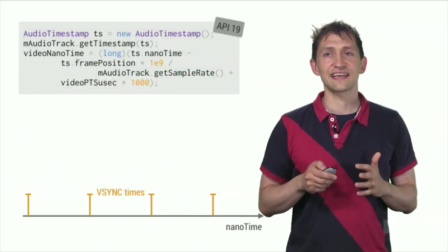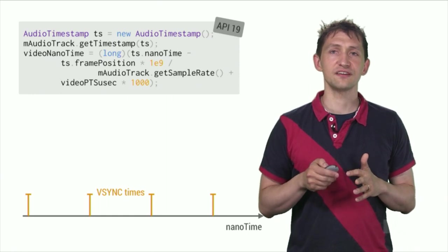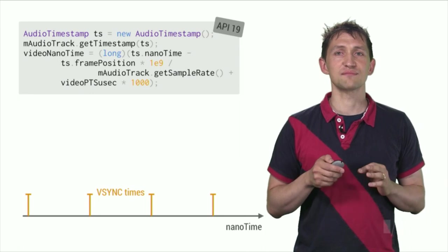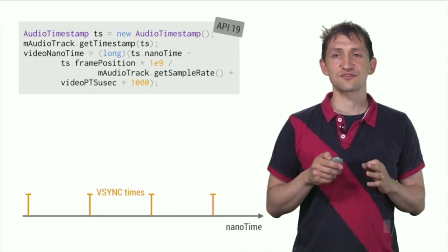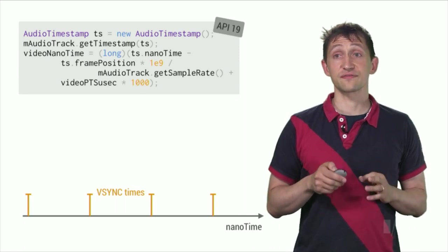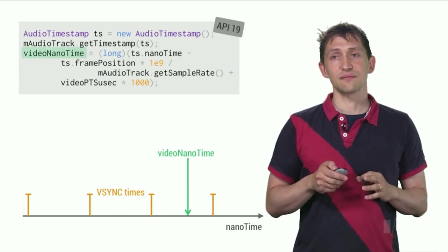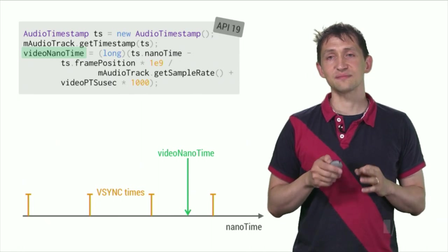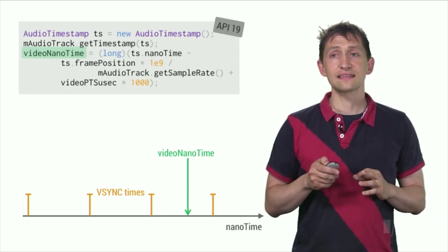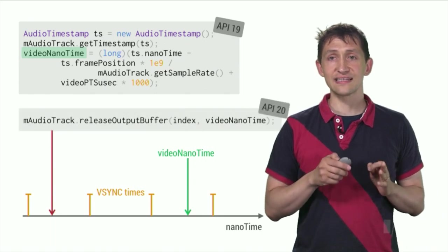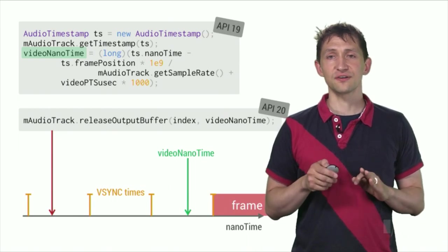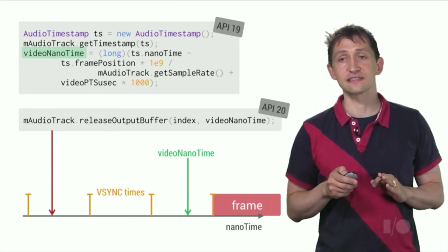Up until now, AV-Sync has been difficult to achieve. With the addition of surface timestamp support in MediaCodec, and high-resolution timestamp support in AudioTrack, this is now straightforward. Scheduling of video frames only works on surface view. Use the precise audio timestamp to calculate the exact system time when you want the video frame to appear on the display. Then, set the timestamp by calling ReleaseOutputBuffer about two vSync periods prior. The frame will be shown at the first vSync after the requested timestamp.